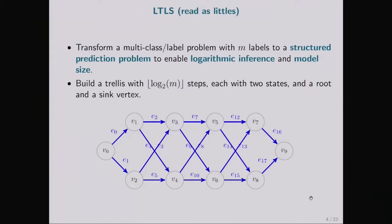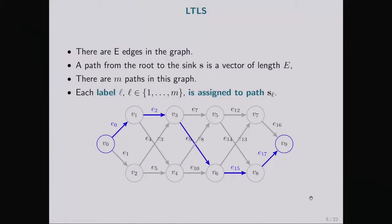In each step, there are two states, and the number of steps is log of m. Each label is assigned to a single path in this graph — a path from root to sink. A path can be represented as a vector of zeros and ones of length e, where e is the number of edges.